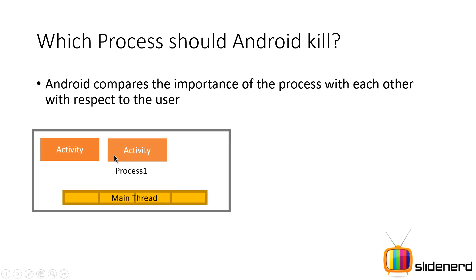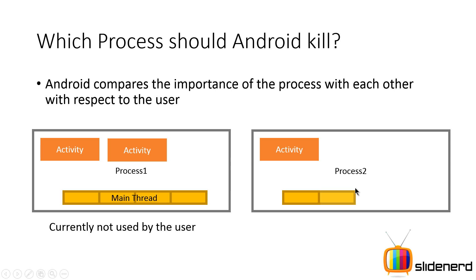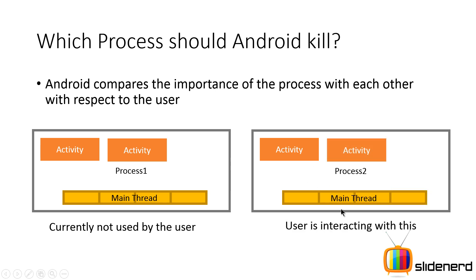Let's say there is Process 1 with two activities and a main thread, but the user is not currently using this app. On the other hand, Process 2 also has two activities and a main thread, and the user is actively working with it — say, typing an SMS. Process 2 has higher importance because the user is currently interacting with it. Hence, on low memory, Process 1 will be the first to be terminated.